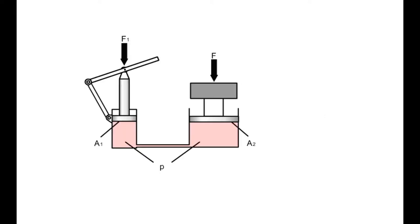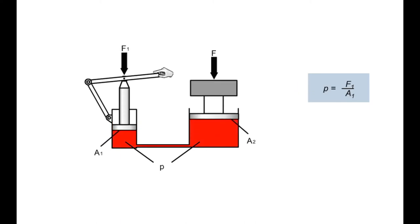The basic functionality of a hydraulic system can be illustrated using a simple jack. Force is exerted on the piston of a hand pump. This force, divided by the piston area, results in the attainable pressure: P equals F1 divided by A1. The harder the piston is pressed, the greater the pressure rises. The pressure applied to the piston's surface in the lifting cylinder continues to increase until it is able to lift the load.